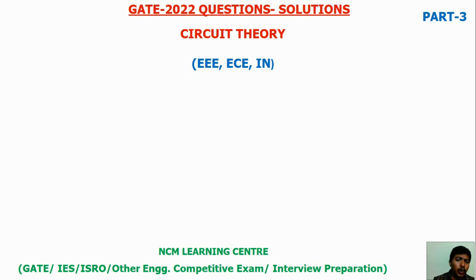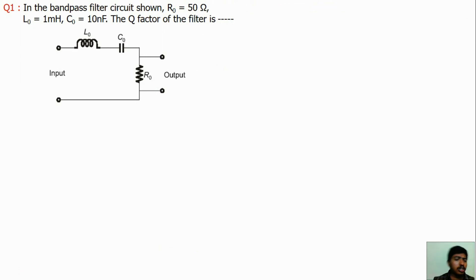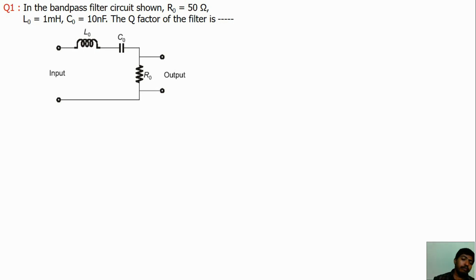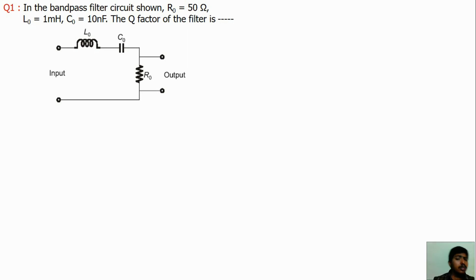In the GATE 2022 instrumentation exam, questions from circuit theory subjects — literally 3 questions are asked. The first 2 questions are from resonance circuit concepts. We have already discussed the resonance concepts — series resonance and parallel resonance.